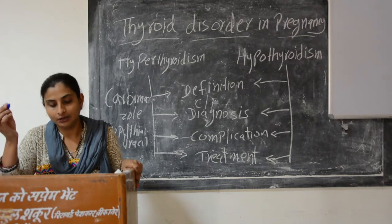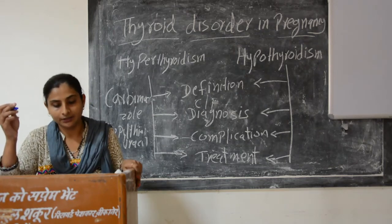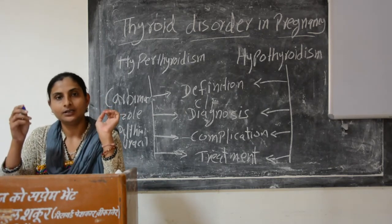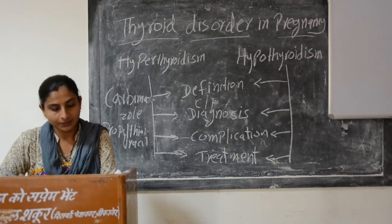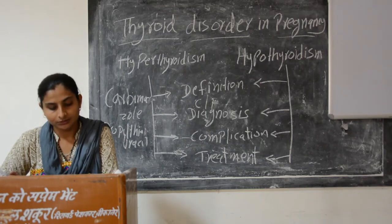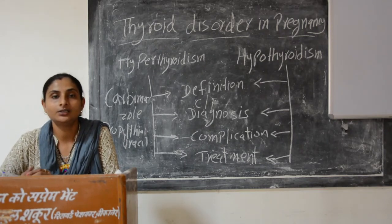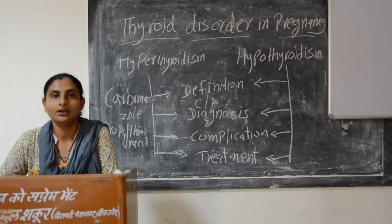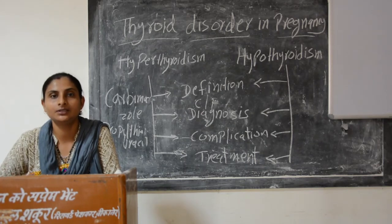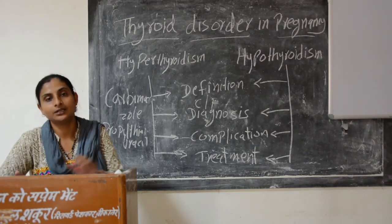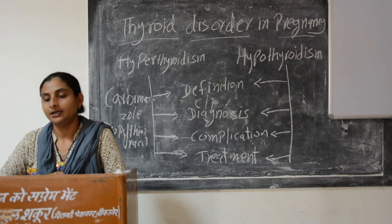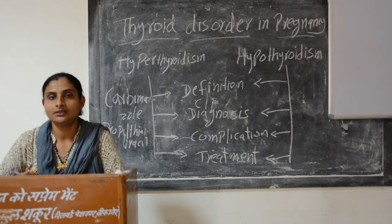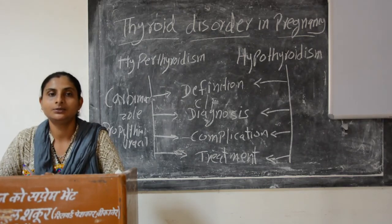Hypothyroidism is also an autoimmune condition. The autoimmune disease starts to destroy the thyroid gland, causing thyroid hormone levels to decrease. This condition is associated with Hashimoto's thyroiditis. The risk of miscarriage is high in untreated hypothyroidism.